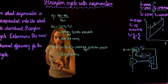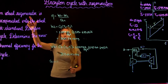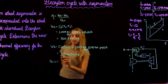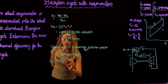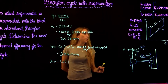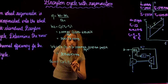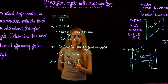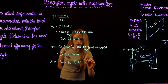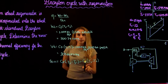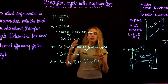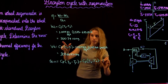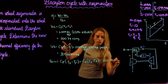For the heat input, we are told it's an ideal regenerator, so we assume no losses in the heat exchanger. Therefore, Q_in = Cp × (T3 − T5'). Since it's ideal, T5' = T4, which means Q_in equals the turbine work — 774 kJ/kg.